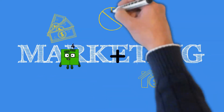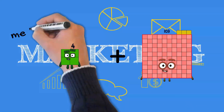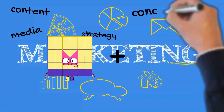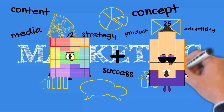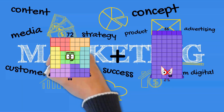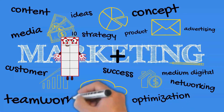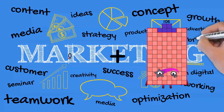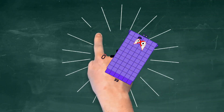4 plus 103 equals 107. 72 plus 39 equals 111. Zero plus 66 equals 66.